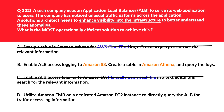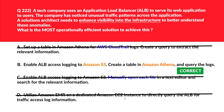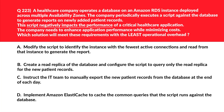Option D says utilize Amazon EMR on a dedicated EC2 instance to directly query the ALB for traffic access log information. This solution involves more operational overhead and complexity compared to using Athena for querying logs, which is option B. Since option B is better than option D, we'll eliminate option D and lock option B as the right answer.